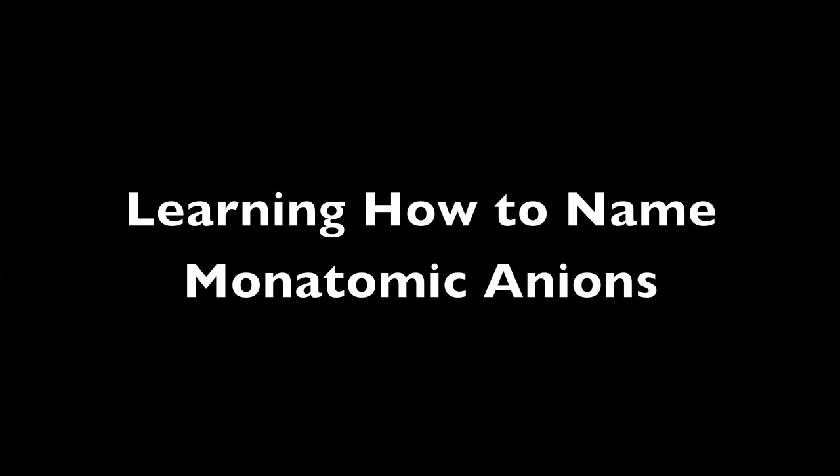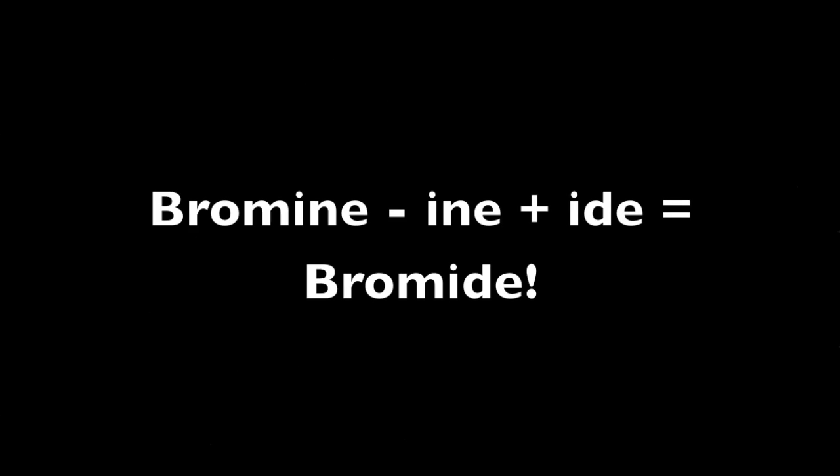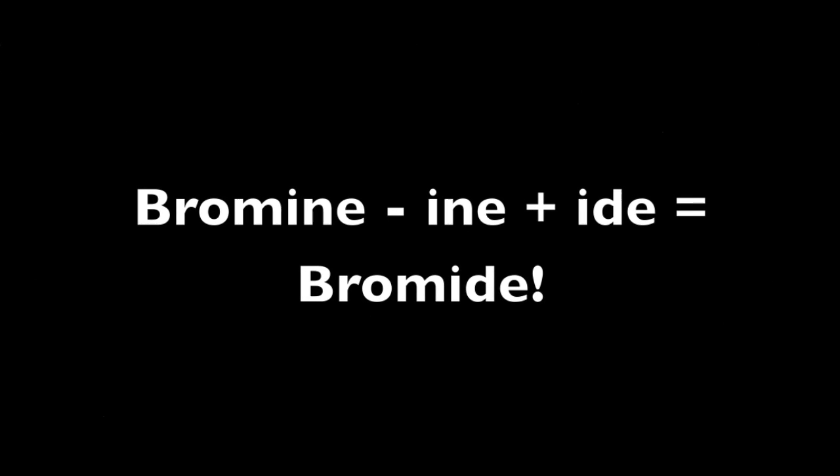Wyatt Coma, this is going up to you. We're learning about monatomic anions today and how to name them. So like my name, bromine — it's a monatomic anion, right? Correct. Do you know how to name them though? No. What you do is you drop the end of the element's name and replace it with an -ide suffix. So my name would then become bromide? Correct.